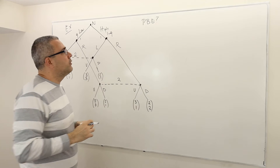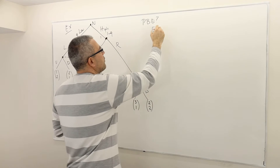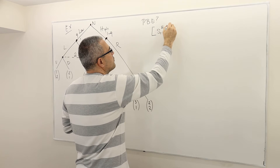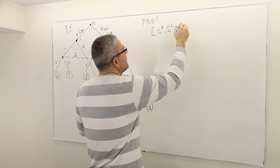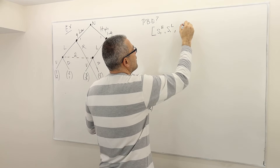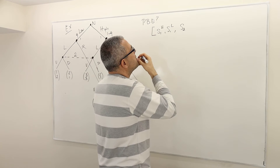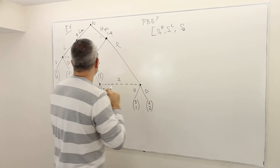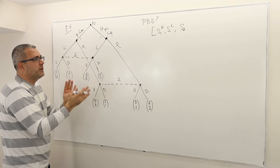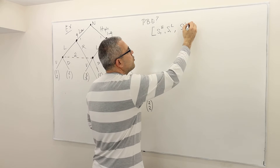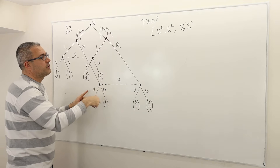Let's start with what a perfect Bayesian equilibrium will look like in this game. Player one has two types, so there's going to be S1 for high type and S1 for low type. Then player two is going to have a strategy — let's call it S2. This S2 is actually what she's going to do at each information set, so let me call it S21 and S22. S21 is either U or D, and S22 is either U or D.